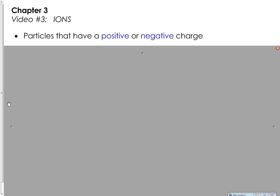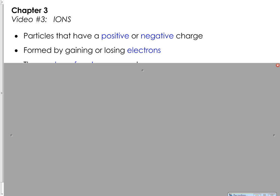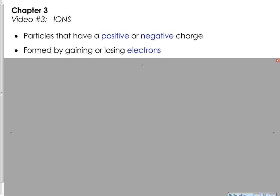We covered this in ninth grade too, so you might find this familiar — in ninth grade physical science you learned how to do this very same thing. An ion is any particle, usually an element but it can be a group of elements, that has a positive or a negative charge, and they're formed by gaining or losing electrons.